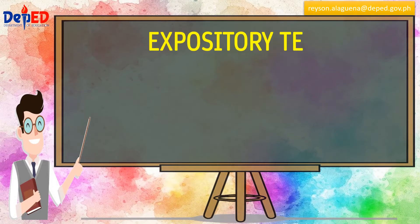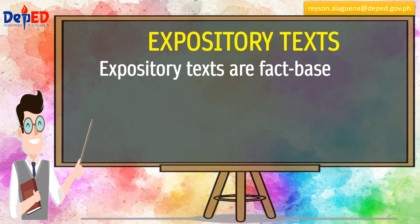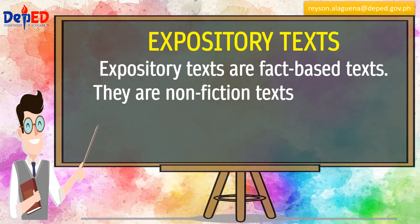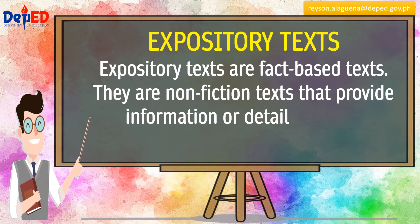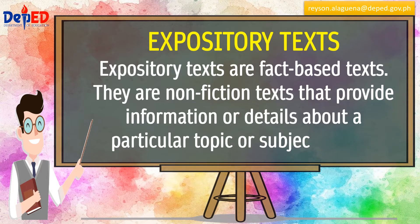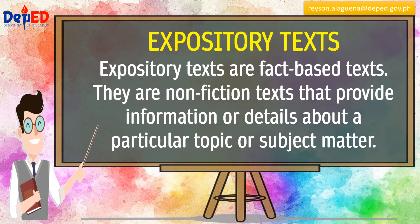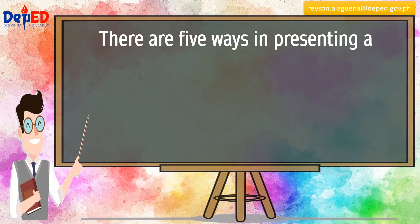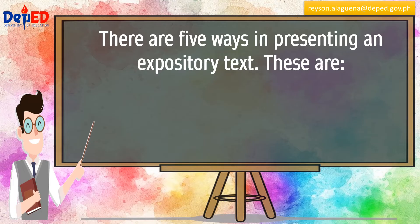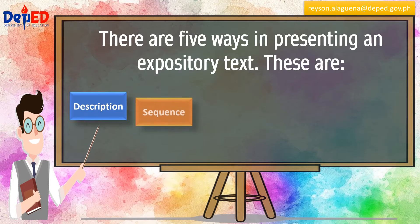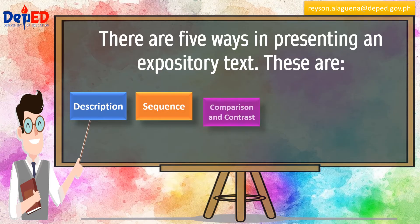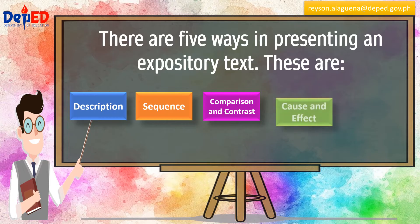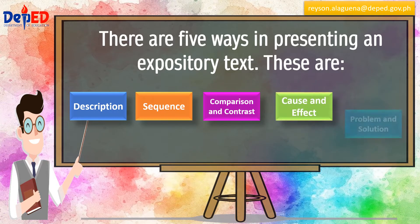Expository texts are fact-based texts. They are non-fiction texts that provide information or details about a particular topic or subject matter. There are five ways in presenting an expository text: description, sequence, comparison and contrast, cause and effect, and problem and solution.